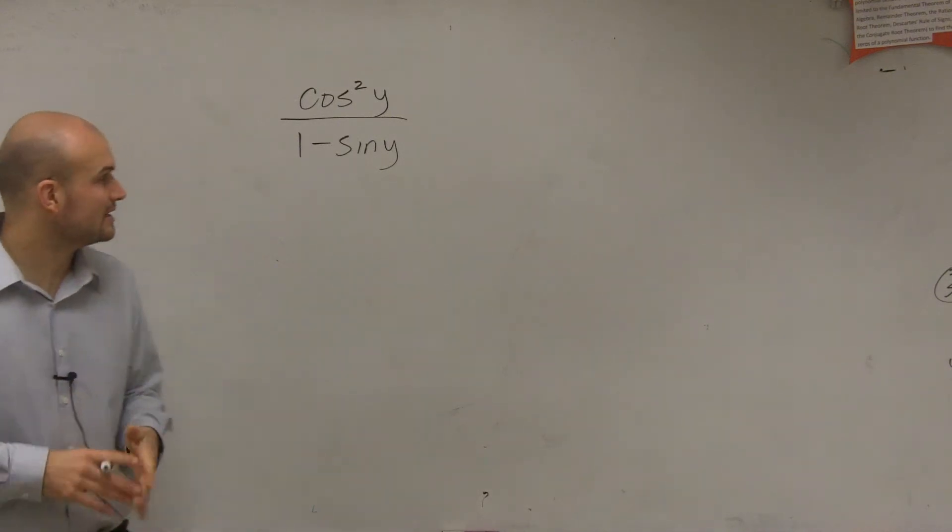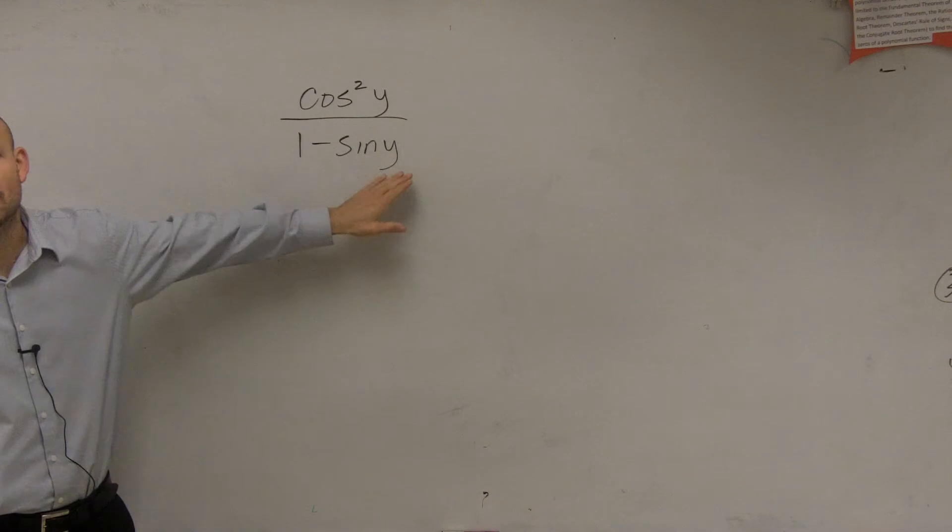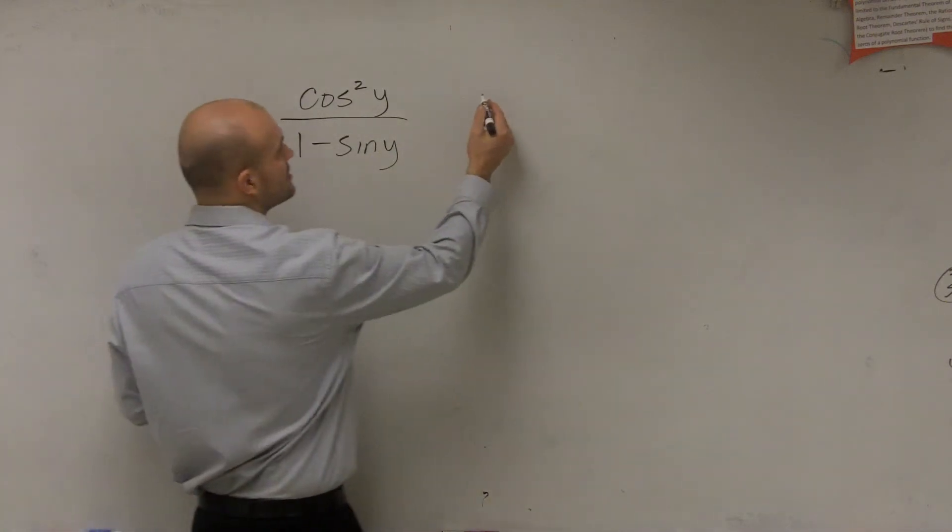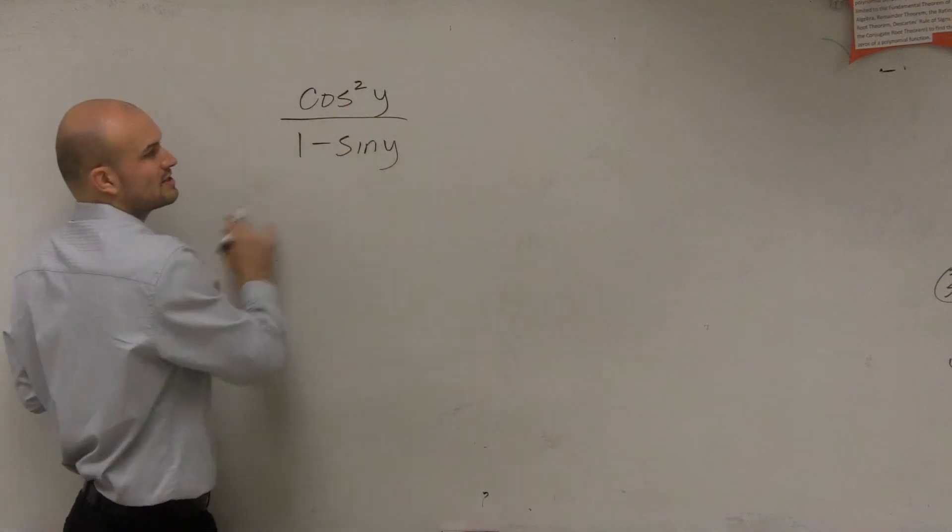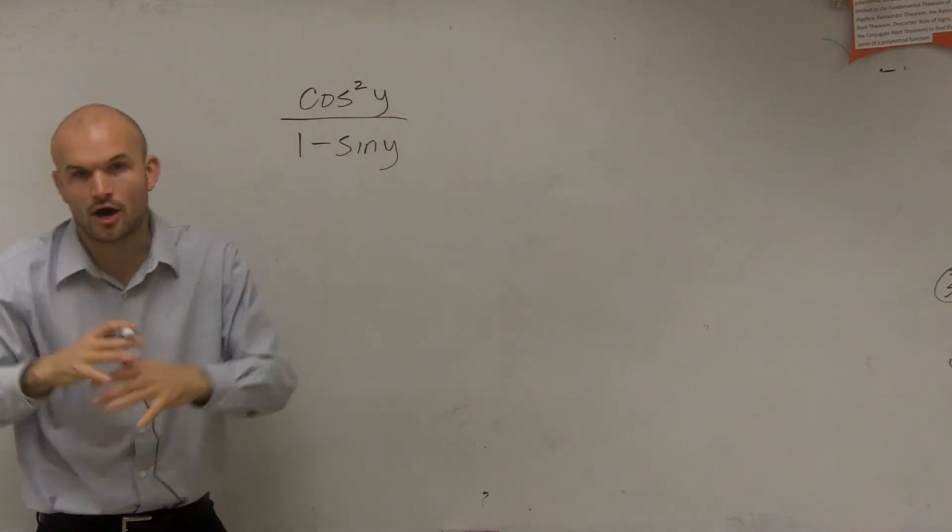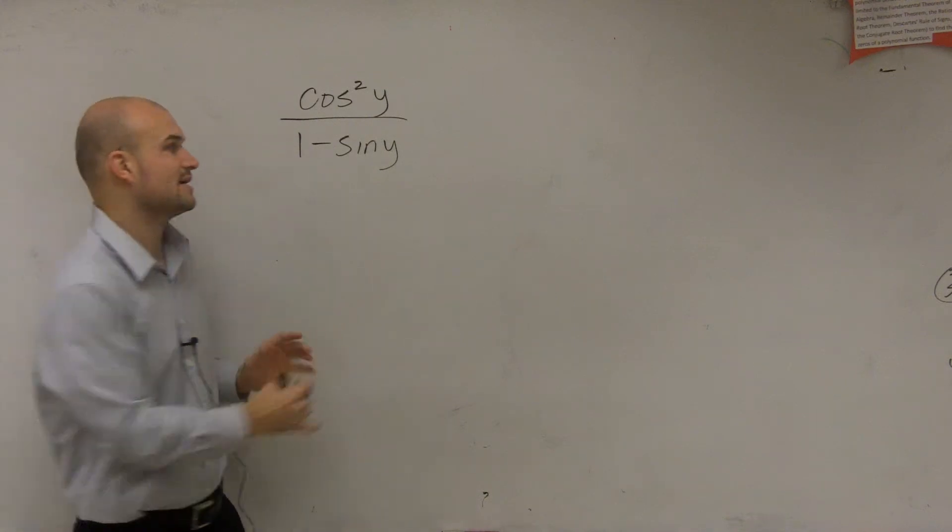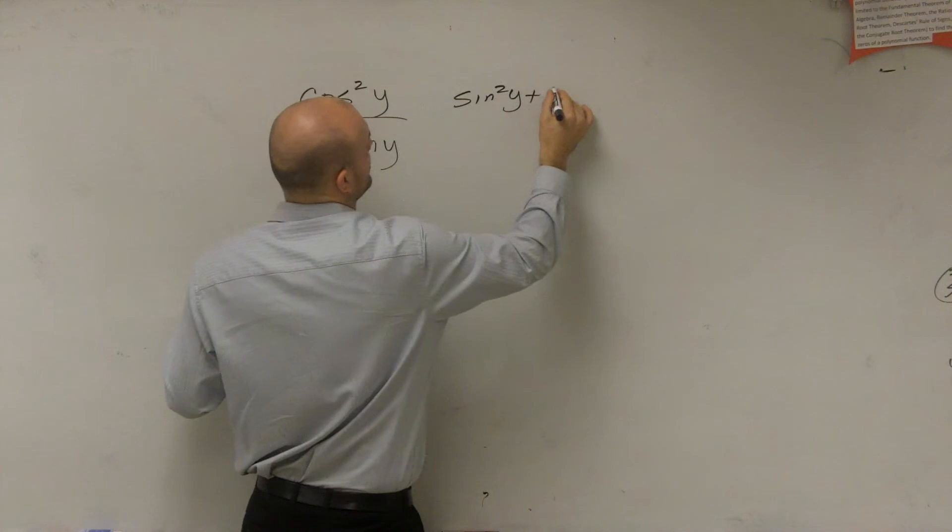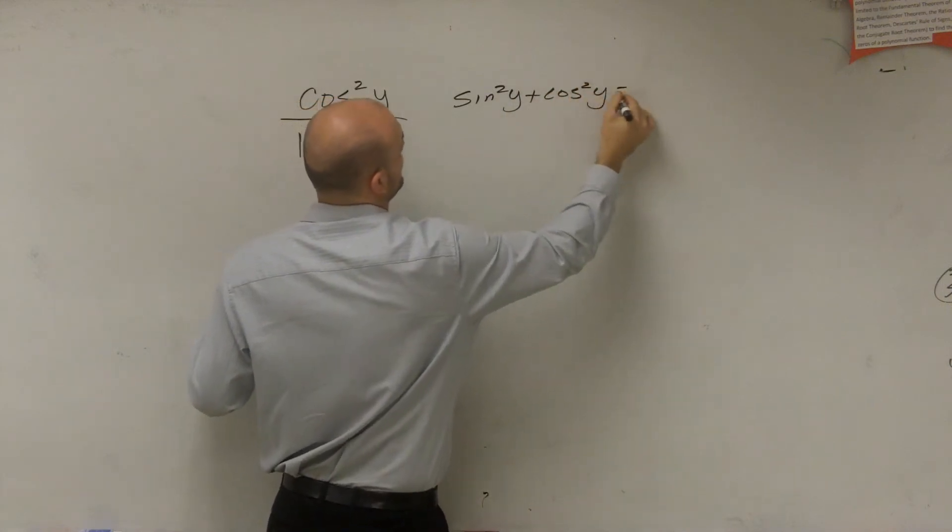Now, one thing automatically looking at this, I see this is 1 minus sine of y. It's very similar to the 1 minus sine squared of y, which we looked at with the cosine squared. So remember, when I see cosine squared, a lot of times when I'm doing these problems, I automatically just write out what the Pythagorean identity is. So I know that sine squared of y plus cosine squared of y equals 1.